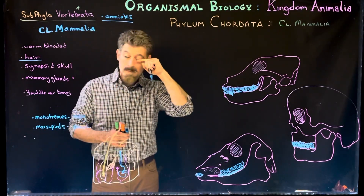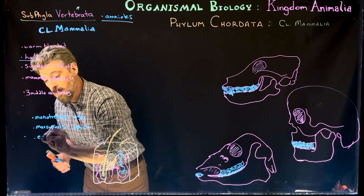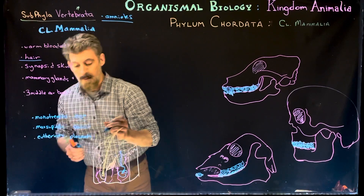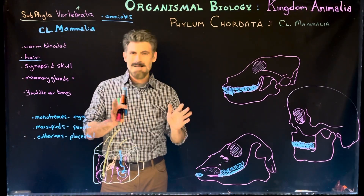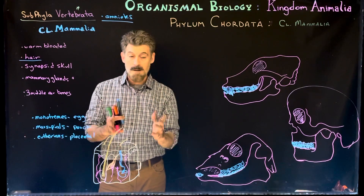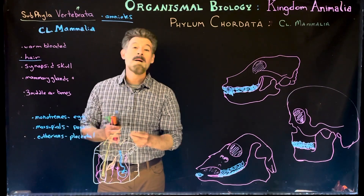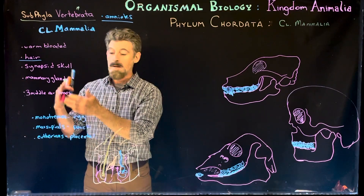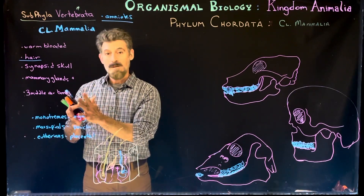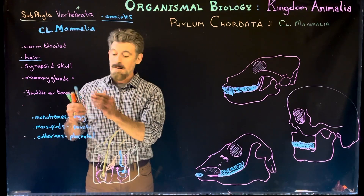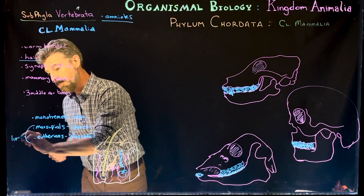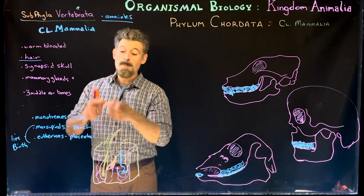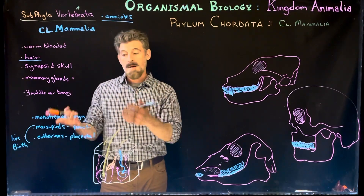Marsupials have a pouch, and then we have eutherians, who are placental. In a previous lecture on egg structure, I showed that many of the same structures are present — the amniotic sac, amniotic fluid, chorion — but the allantois and yolk sac get modified so nutrients come from the mother. The embryonic and maternal tissues interact with the uterine wall and placenta, giving essentially live birth. So we can't say all mammals have live birth, but the majority do.